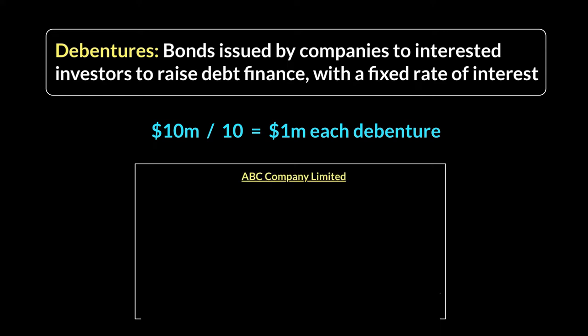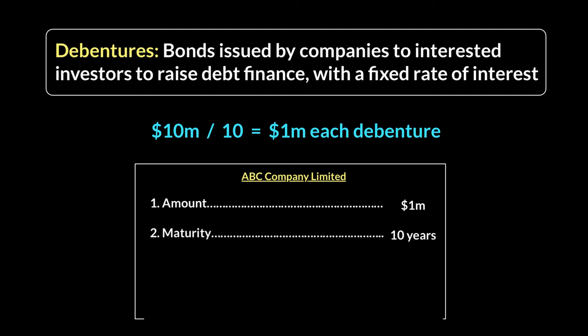The name of the company is going to be there — let's assume that's ABC Company. The first thing it will state is the amount of the debenture: $1 million. If I pay $1 million, I get this promissory note which says that I have lent $1 million to the company. Secondly, it will include its maturity — how long the company will hold that amount from investors. In this case, the money will be borrowed for 10 years. Thirdly, what is going to be the investors' profit percentage? The company has agreed to pay 5% per annum on a $1 million investment.